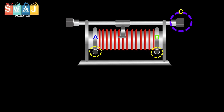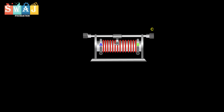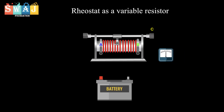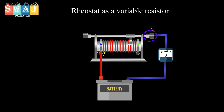A rheostat can be used as a variable resistor as well as a potential divider. To use it as a variable resistor, one of the fixed terminals A and the sliding terminal C are inserted in the circuit. The resistance of the wire between A and the sliding contact C is used. If the sliding contact is shifted away from terminal A, the length and hence the resistance of the circuit increases.